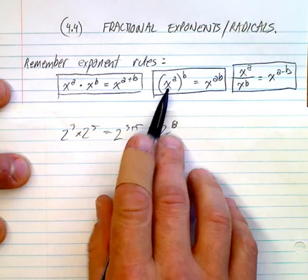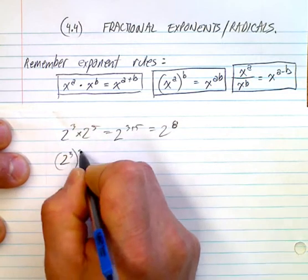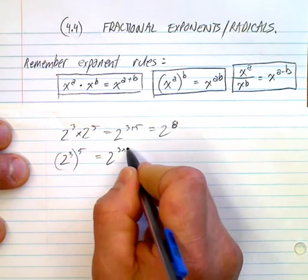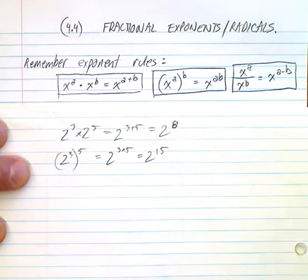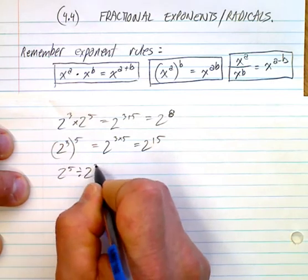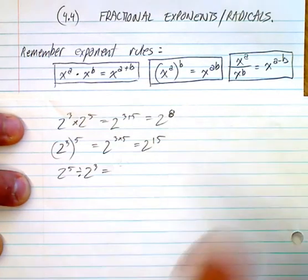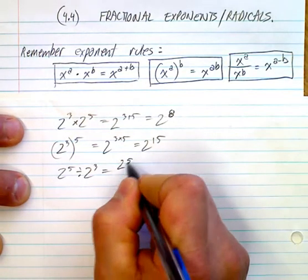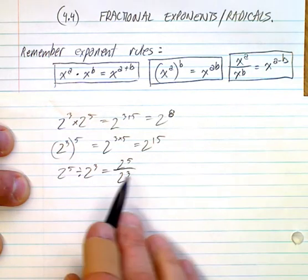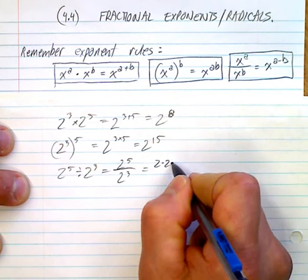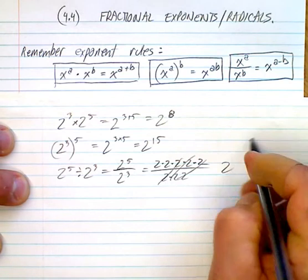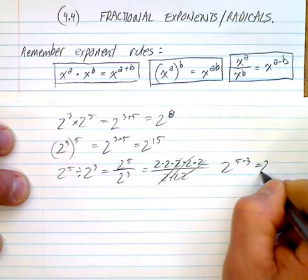We also have a power law. For example, if I had 2 to the power of 3, all to the power of 5, that would be 2 to the power of 3, that's three 2's, five times. Hopefully you can see that this is 3 times 5, which gives me 2 to the power of 15. And a third law: say I had 2 to the power of 5 divided by 2 to the power of 3. Division is represented by this line — a fraction is basically division — so you have five 2's on top and three 2's on the bottom, leaving you with 2 to the power of 2, which is 5 minus 3.